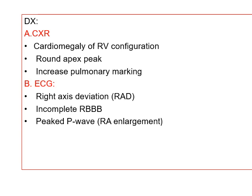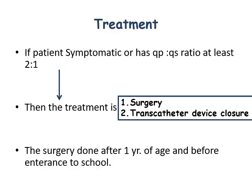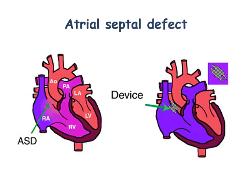Diagnosis by chest X-ray shows right ventricular enlargement, prominent pulmonary artery, and increased pulmonary markings due to increased blood flow to the lungs. ECG shows right axis deviation, incomplete right bundle branch block, and a large P wave due to right atrial enlargement. Echo is most important for diagnosis. Catheterization is not essential for diagnosis — it is indicated only for treatment and to exclude other associated anomalies.